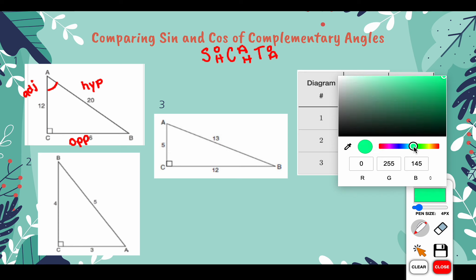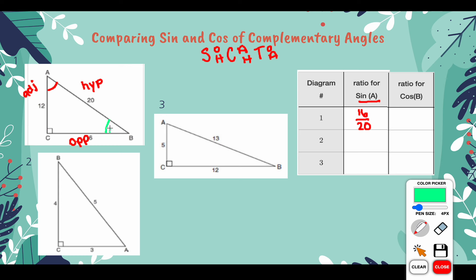Now let's do the ratio of cosine of B. Our reference angle is going to be different — angle B is our reference angle in green — which means that our sides are going to be labeled slightly differently. For B being our reference angle, our opposite side is going to be AC. Our hypotenuse is still going to remain AB, because this is still the side across from the right angle, and this side here would be our adjacent side. Cosine is adjacent over hypotenuse, so the ratio of cosine of B is 16 over 20.